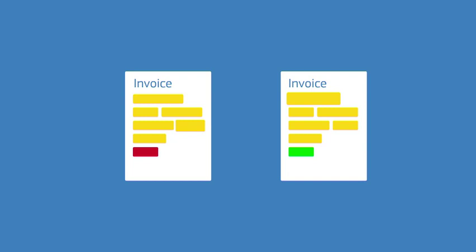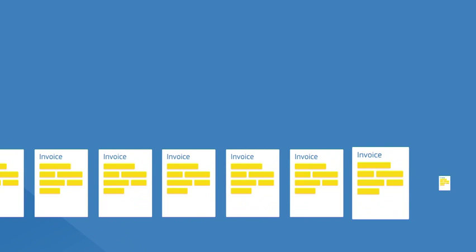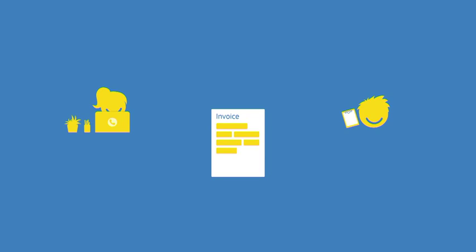The team charged with developing the European standard identified the information that is used in most invoices and based on this specified what we call the core invoice. Some of the core information is mandatory in all invoices, but some of it is optional and is included only when necessary. In all cases, if both seller and buyer conform to the European standard, the seller will know that if he sends the information the buyer will be able to process it correctly.